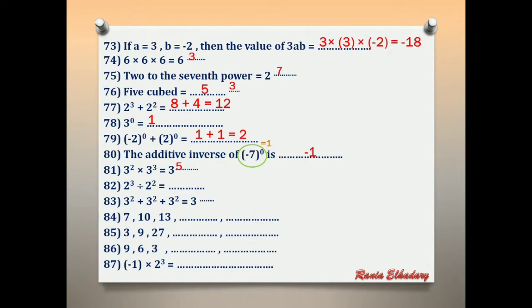Number 82: 2 power 3 divided by 2 power 2. When dividing with the same base, subtract the powers. 2 power (3−2) = 2 power 1 = 2.